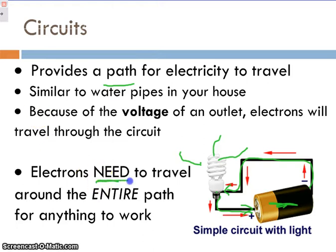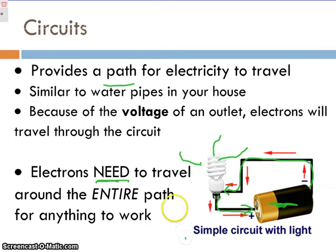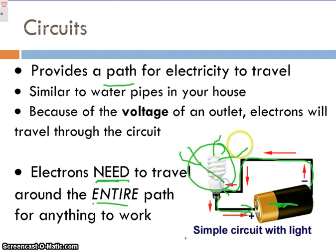Electrons need this path. They're not going to make it from the battery to the light bulb without it. If the entire path isn't there, then electrons won't flow and your light bulb will not light up. It's incredibly important that we have a voltage source and a path for our electrons to travel, and if we have that, it's called a circuit.